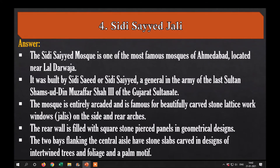Next is Siddhi Sayyad Mosque. Siddhi Sayyad Mosque is one of the most famous mosques of Ahmedabad, located near Lal Darwaza. It was built by Siddhi Sayyad, a general in the army of the last Sultan Shams-ud-Din Muzaffar Shah III of the Gujarat Sultanate. The mosque is entirely arcaded and is famous for its beautifully carved stone lattice windows, known as jalis, on the side and rear arches. The two bays flanking the central aisle have stone slabs carved in designs of intertwined trees, foliage, and palm motifs.